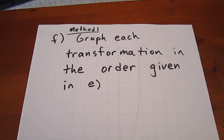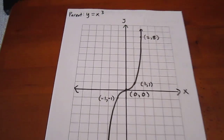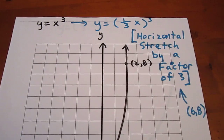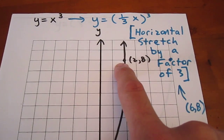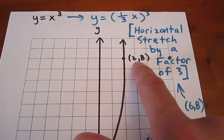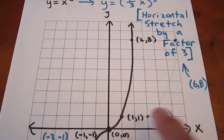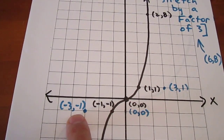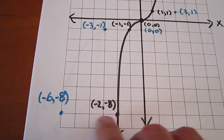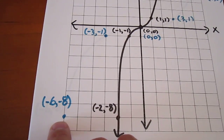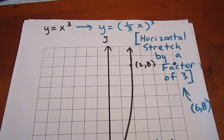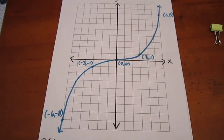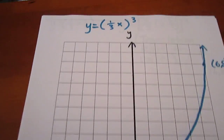We'll graph each transformation in the order given, starting with the parent function y equals x cubed. We then consider a horizontal stretch by a factor of three, multiplying each x-coordinate by three and leaving y-coordinates unchanged. So two-eight becomes six-eight, one-one becomes three-one, zero-zero stays zero-zero, negative one negative one becomes negative three negative one, and negative two negative eight becomes negative six negative eight. We ignore the black curve and draw a curve through the blue points — it's quite a bit wider, which is what's meant by a horizontal stretch.